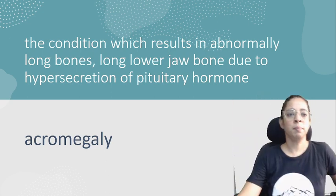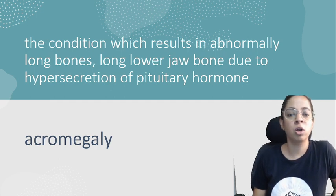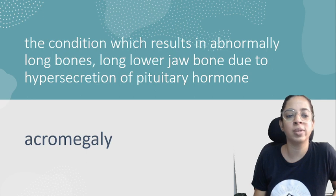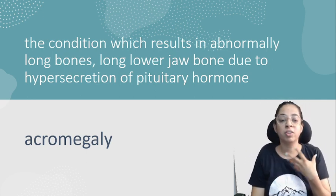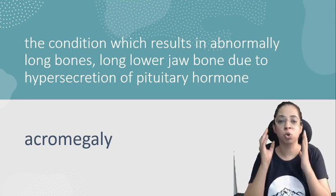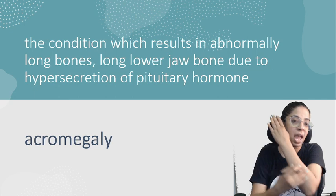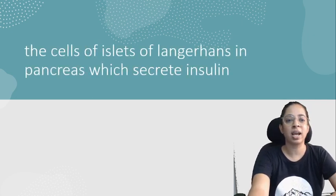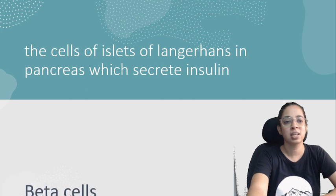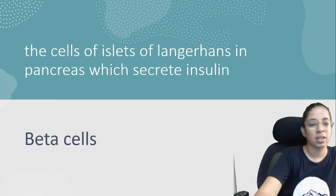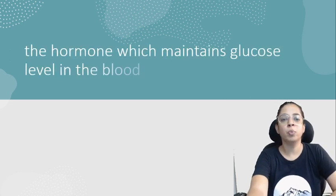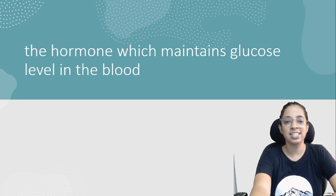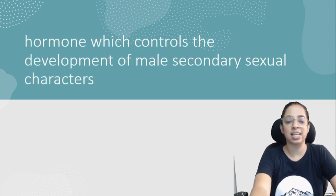The condition which results in abnormally long bones and long lower jaw bones due to hypersecretion of pituitary hormone is acromegaly. If you have seen my videos, I've shown you the exact picture of this disease — there are abnormally long bones in the hands and a long lower jaw. Next: the cells of the islets of Langerhans in the pancreas which secrete insulin — the technical term is beta cells. The hormone which maintains glucose level in the blood — yes, insulin.